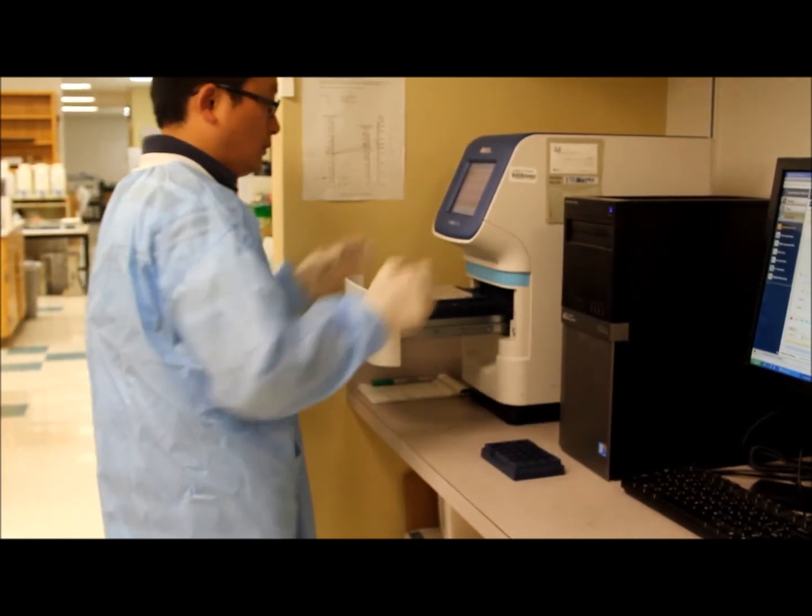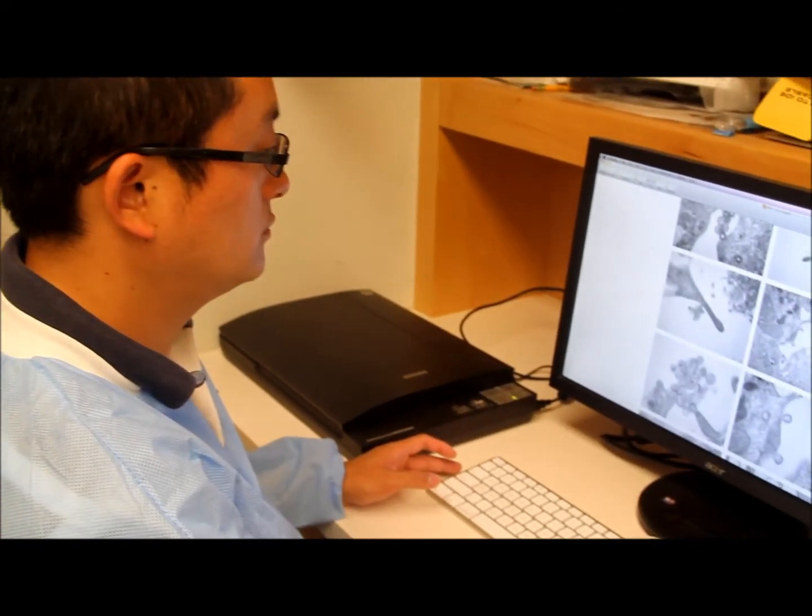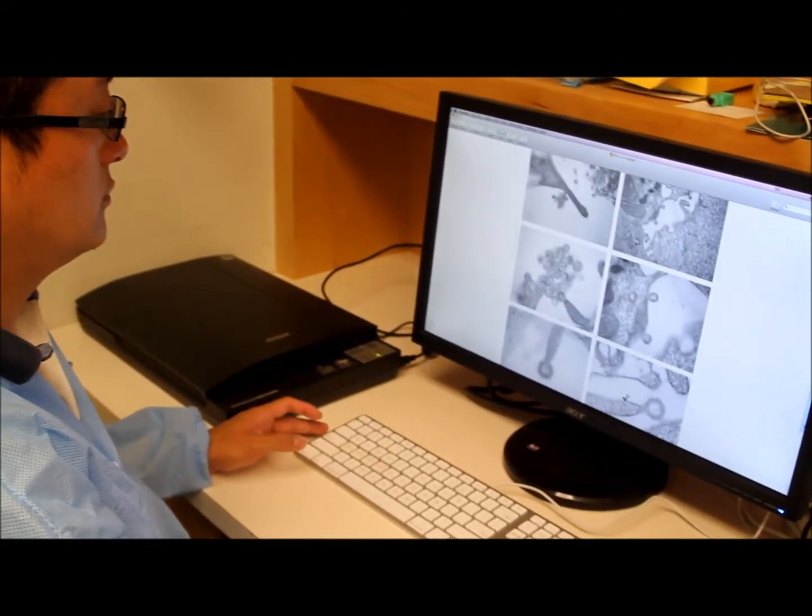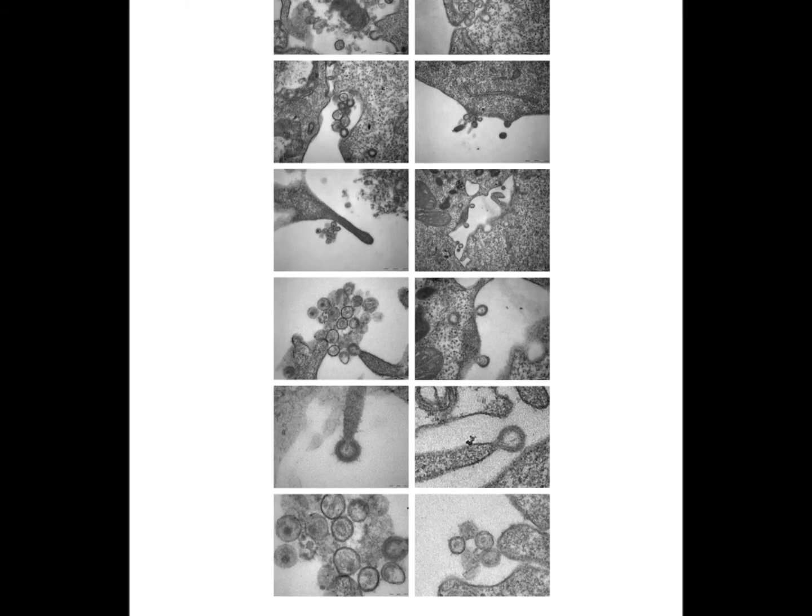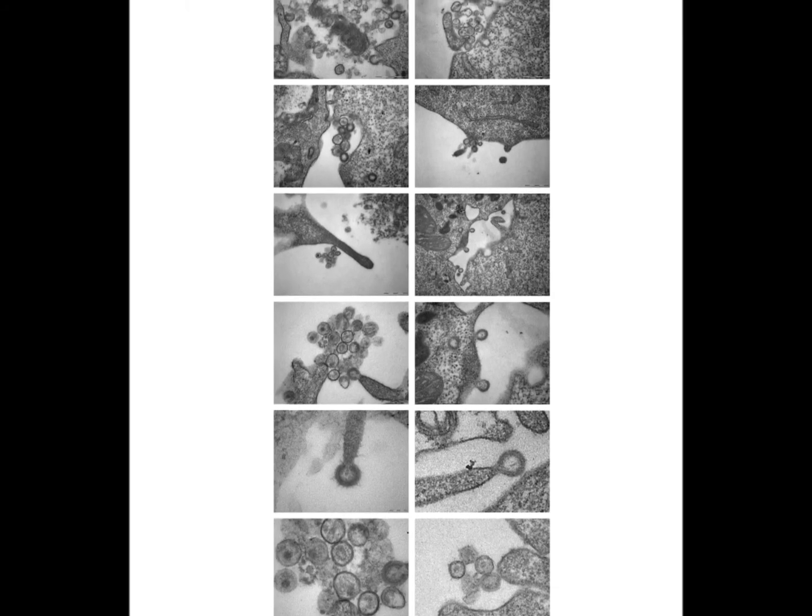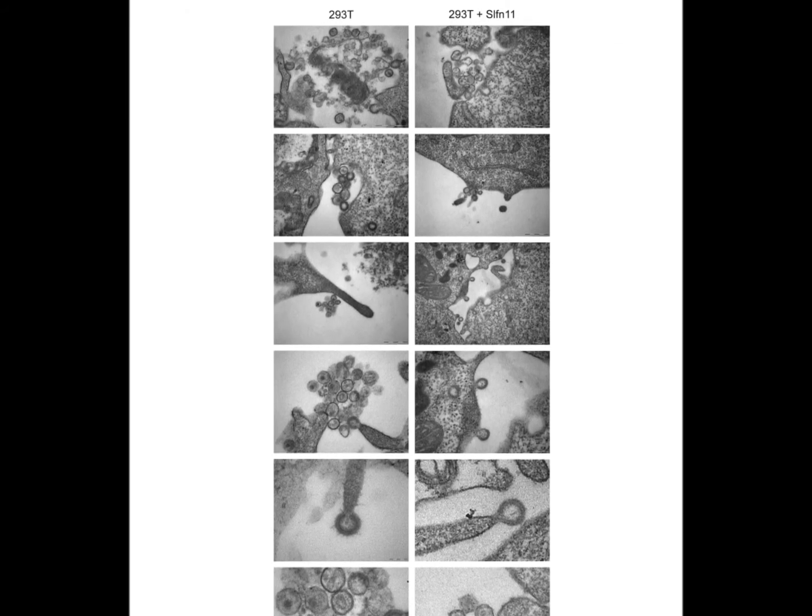The researchers demonstrated in laboratory experiments that the absence of human Schlafen 11 resulted in more HIV virus-like particles in a human cell culture shown in photos in the left-hand column than cells which have the gene, which are shown in the photos at right.